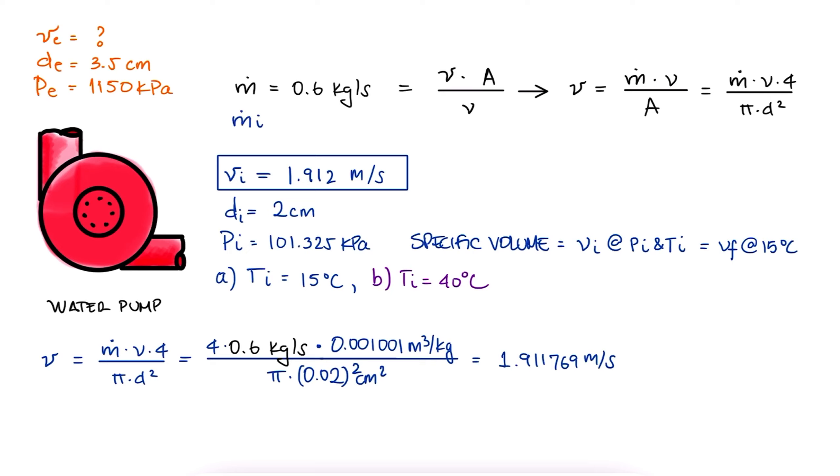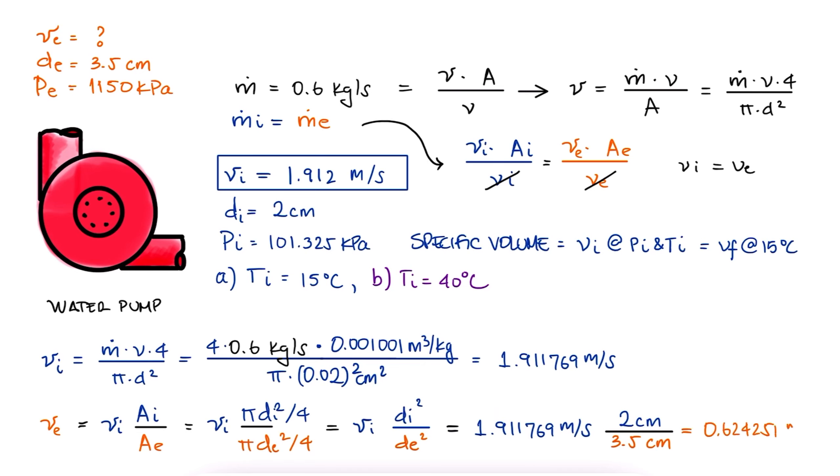Since the mass flow rate coming in is the same as that coming out, we write this in terms of our three variables on both sides, realize that the liquid is incompressible and therefore the specific volumes are the same, and solve for the velocity at the exit. We substitute the diameter values and the velocity for the inlet to find the velocity at the exit.